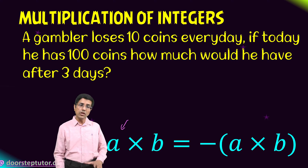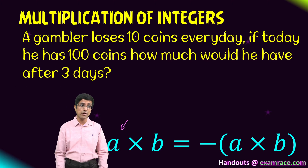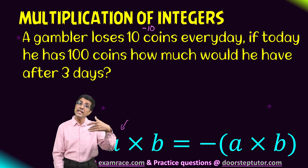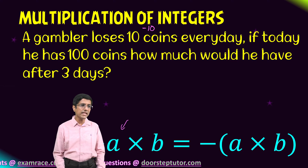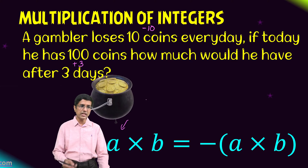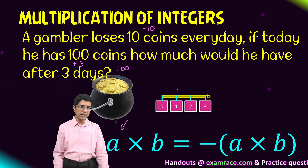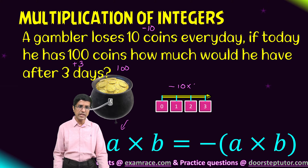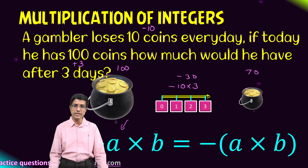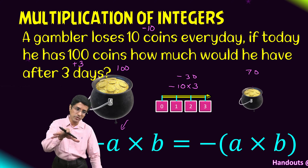Now the same gambler is losing — instead of winning 10 coins he is losing 10 coins every day. Because he is losing we give it the negative sign: minus 10. What would happen after 3 days? He starts with 100 coins, then loses 10 coins per day for 3 days: minus 10 into 3 equals minus 30. So he ends up with 100 minus 30, which comes out to 70 coins. His total amount of money actually reduces after 3 days — exactly what we would expect.